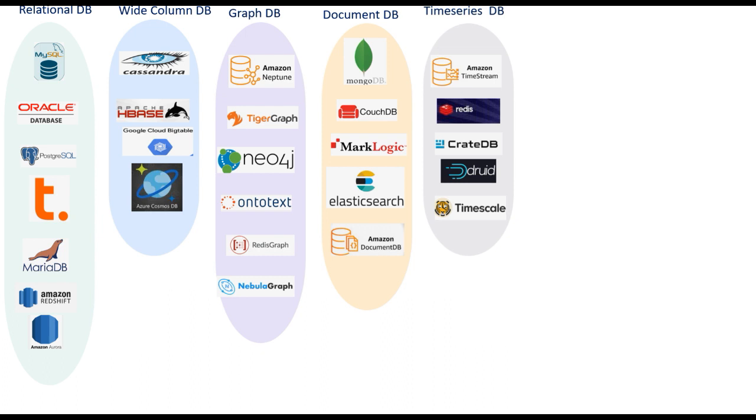Some examples of time series databases are Amazon Timestream, Redis, InfluxDB, Druid, and Timescale.